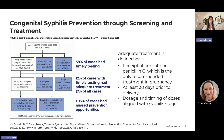In these cases, only 58% had timely screening in pregnancy, and only 12% of those cases with timely screening had adequate treatment, which was just 7% overall of the cohort. Adequate treatment involves taking the correct antibiotic, which is benzathine penicillin G, at the correct dose and timing for the syphilis stage, and ensuring it is taken at least 30 days prior to delivery. Overall, this analysis found that at least 93% of these congenital syphilis cases had identifiable missed prevention opportunities.